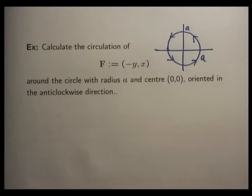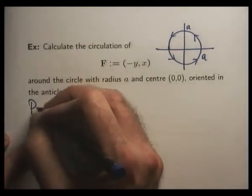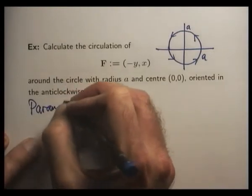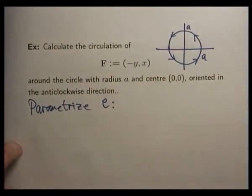So here's our closed curve. Essentially, we're asked to integrate around that curve. And for that, we need a parametrization. So a natural parametrization here would be, of course, c(t) = (a cos t, a sin t) for 0 ≤ t ≤ 2π.